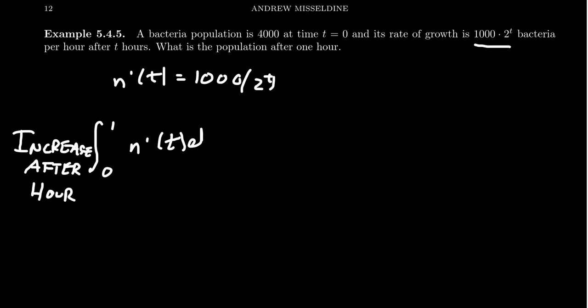So we're going to integrate from zero to one n prime t dt, which gives us the integral from zero to one of 1000 times 2 to the t dt. Because this is an integral, we can factor out the 1000 and put it out in front: integrate from zero to one, 2 to the t dt.